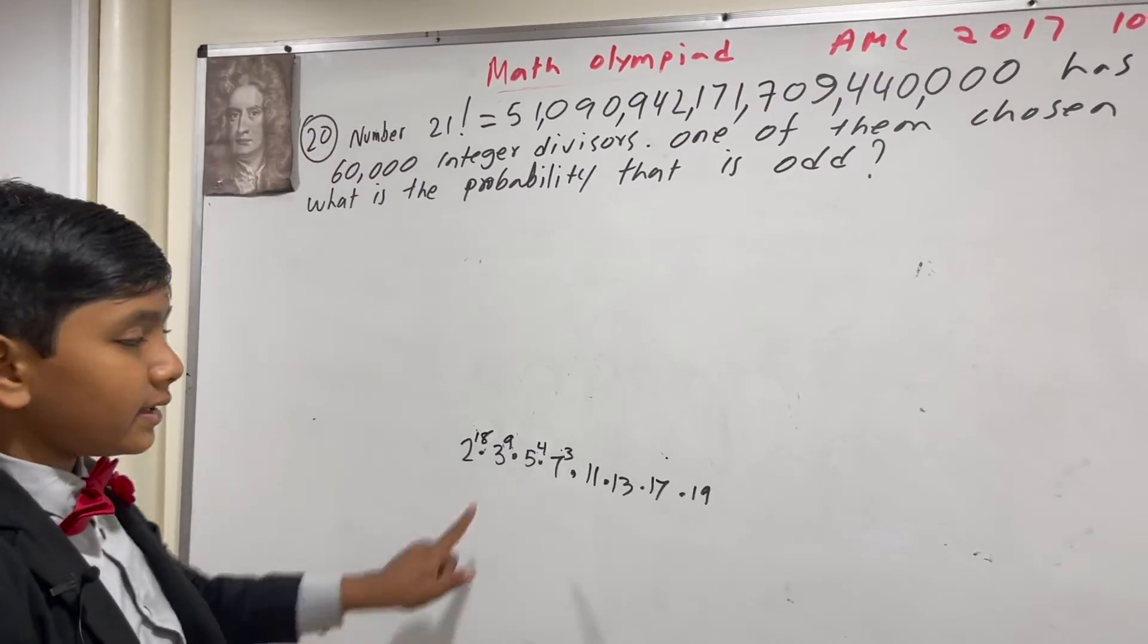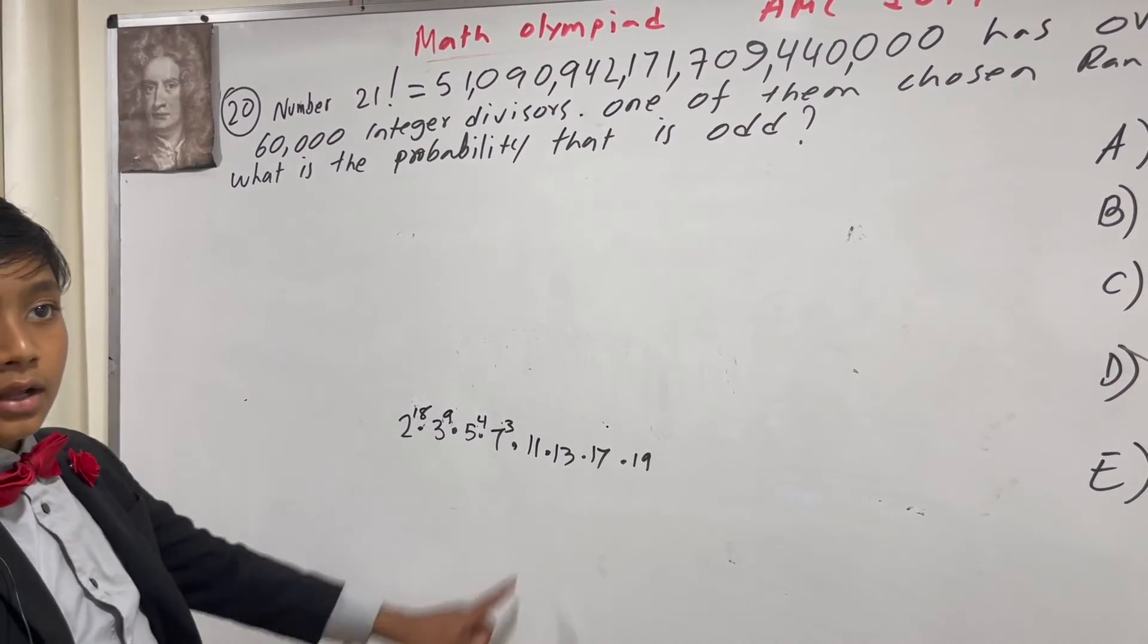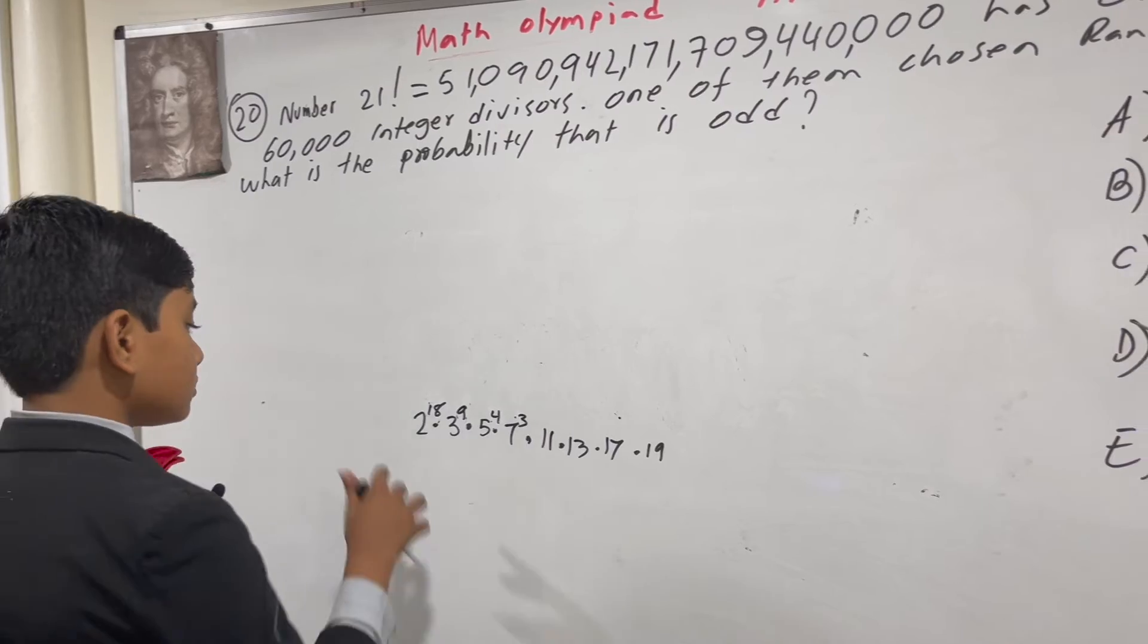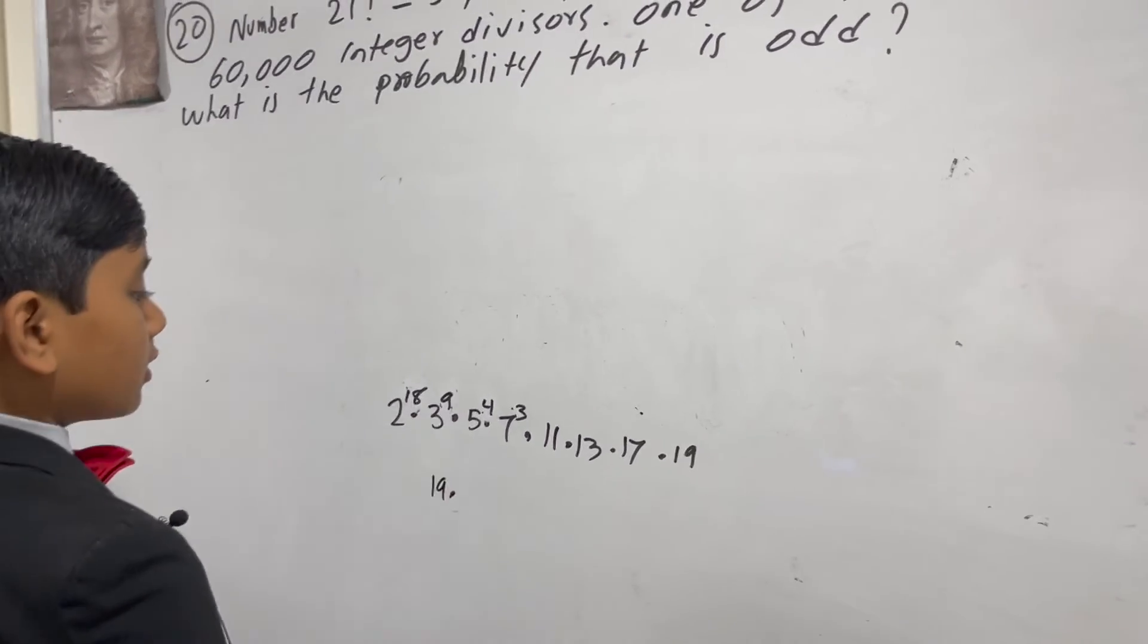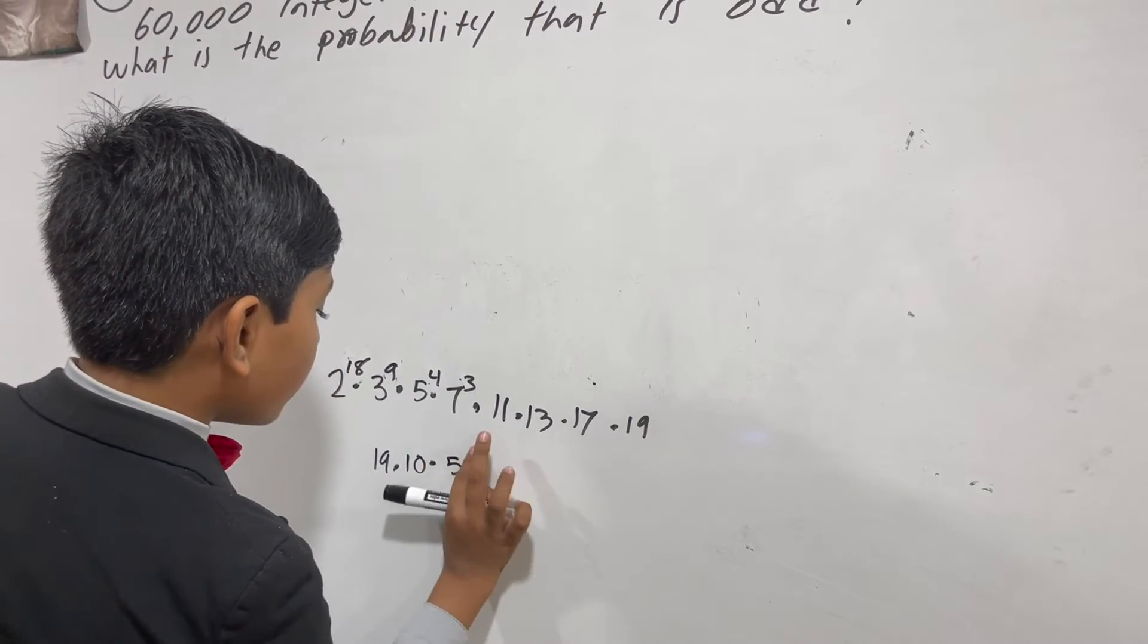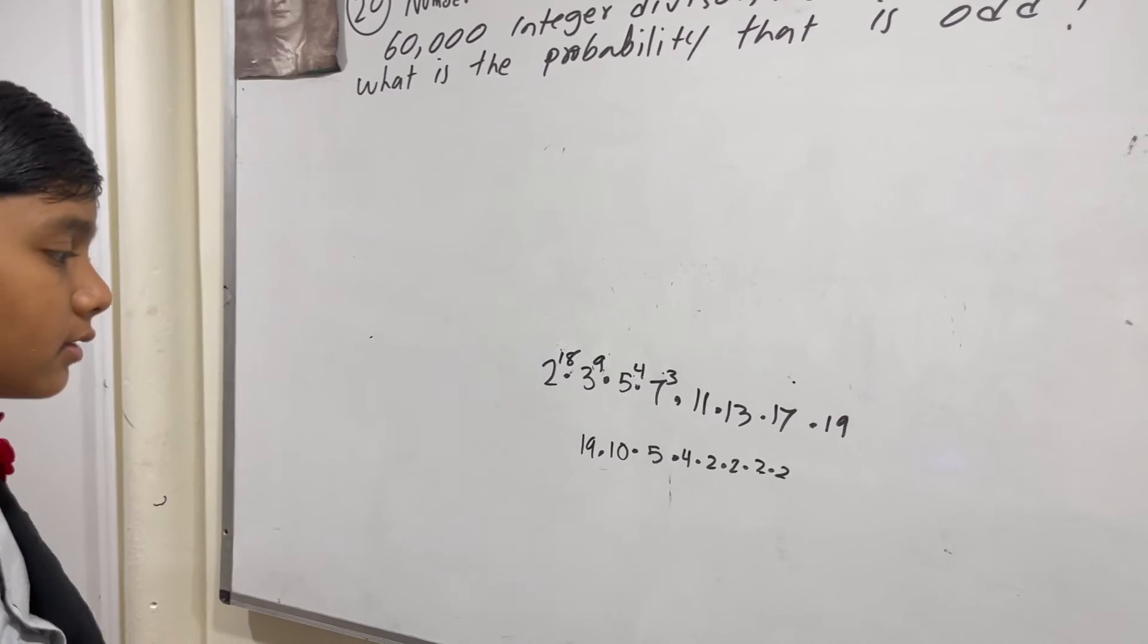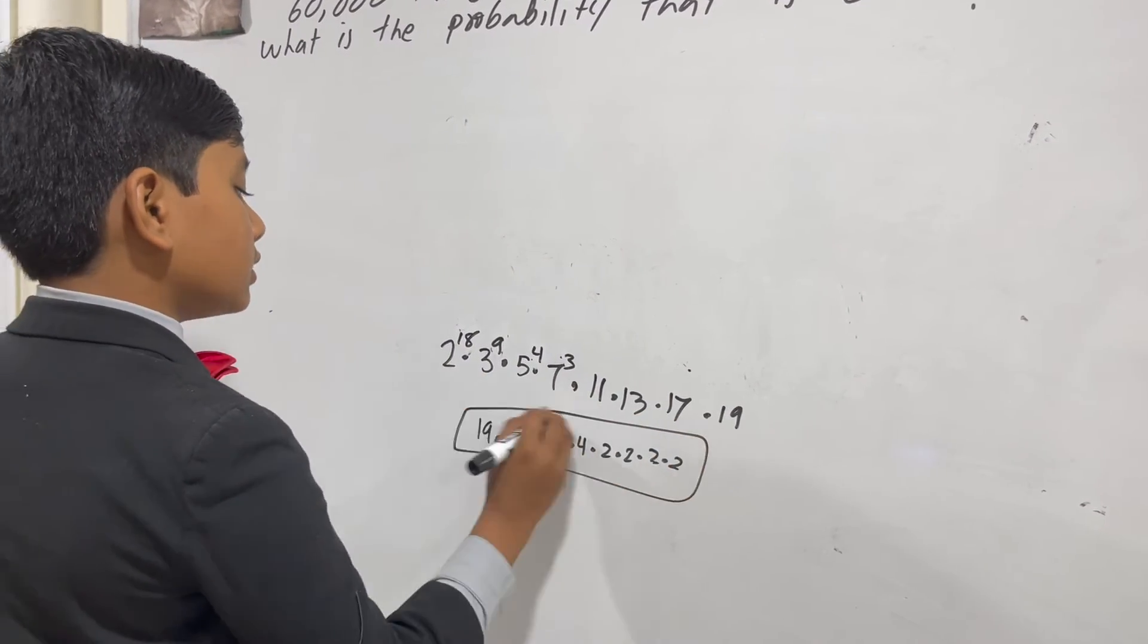Which makes this factorization: 2 to the 18 times 3 to the 9 times 5 to the 4 times 7 to the 3 times 11 times 13 times 17 times 19. So now, what is 18 plus 1? 19. 9 plus 1? 10. 4 plus 1? 5. And then 2, 2, 2, 2. This is the amount of divisors in total.